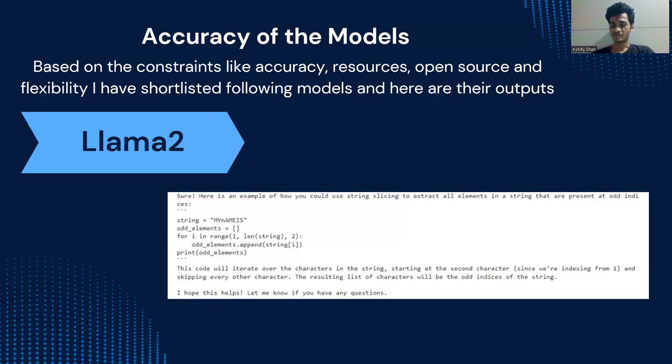Now, the models which I have tried, I have shortlisted them as much as possible based on the accuracy which they have provided. I have tried shortlisting them into three. First one is Llama-2. Here we can clearly see I have given the model the task of slicing a string. The model is able to slice the string and extract all the odd elements from it.